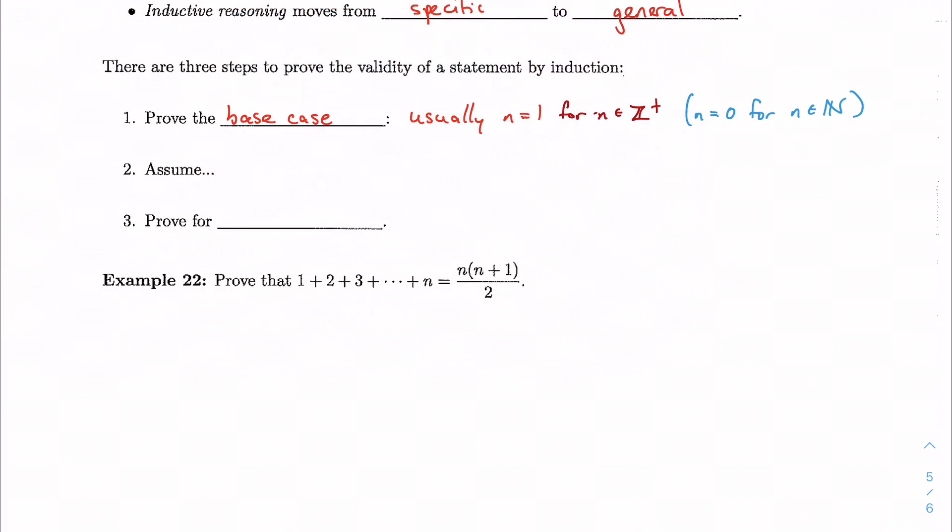The next thing we do is we make an assumption, and this is what allows us to move to a general case. We assume that the statement is true for n equal to k, so it's true for some number of cases.